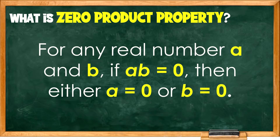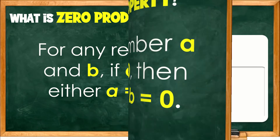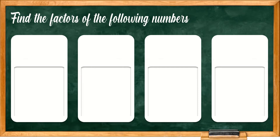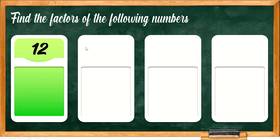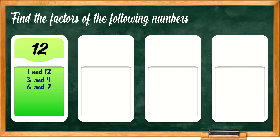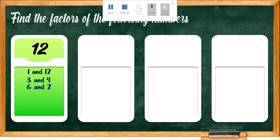Before we apply the zero product property, let us first review the factors of the following numbers. When we say factors, we are looking for two numbers that when multiplied, the product will be equal to a given number — for example, positive 12. So, 1 times 12 equals 12, 3 times 4 equals 12, and 6 times 2 also equals 12.